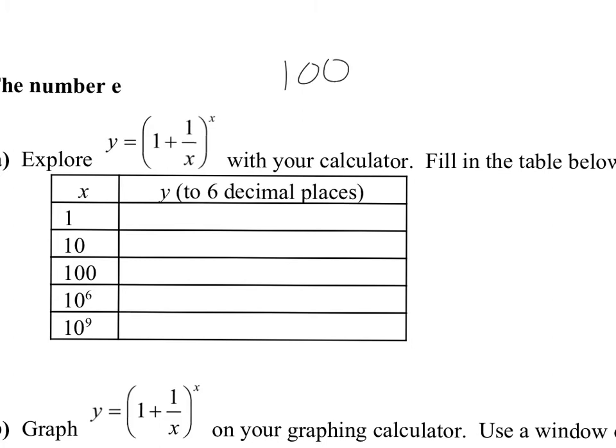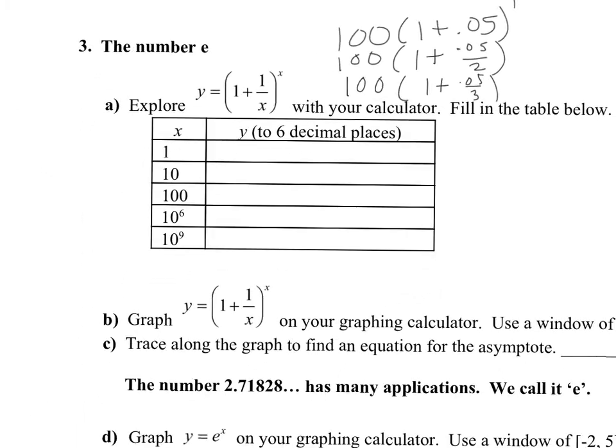So we use e when we call what's called compounding continuously. So this number is derived from if you start out with $100 and you're going to earn 5% interest, how much will you have after one year? This is the function that you would use. If you had $100 and it compounded twice a year, how much would you have? If it compounded three times a year, how much would you have? So if you compound continuously, we don't have a number for that denominator. So we do get close to a number, and it's called e.